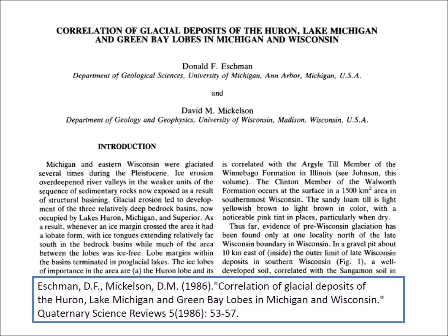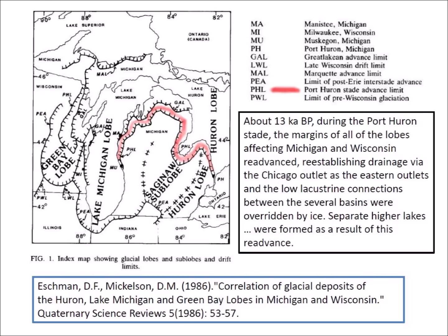I provided him with a paper published by Eschmann & Michelson in 1986 that concludes that following an earlier retreat, the Laurentide Ice Sheet re-advanced over Saginaw Bay. The paper says that about 13,000 years before the present, during the Port Huron Stage, the margins of all the lobes affecting Michigan and Wisconsin re-advanced, re-establishing drainage via the Chicago outlet as the eastern outlets and the low lacustrine connections between the several basins were overridden by ice. Separate higher lakes were formed as a result of this re-advance.